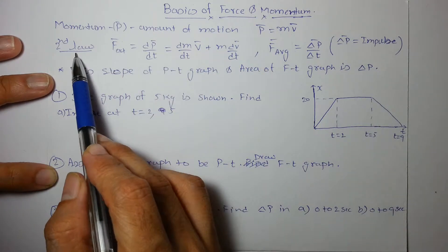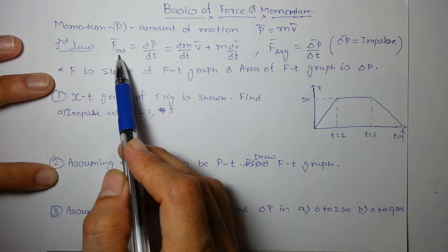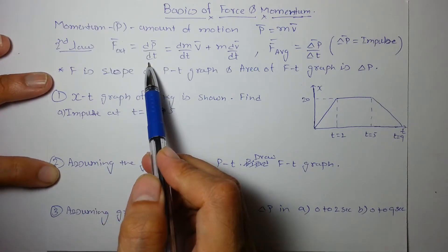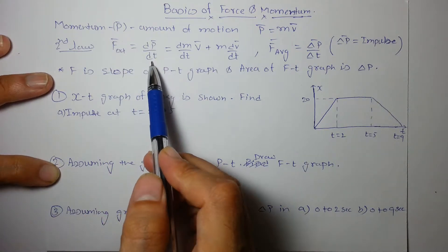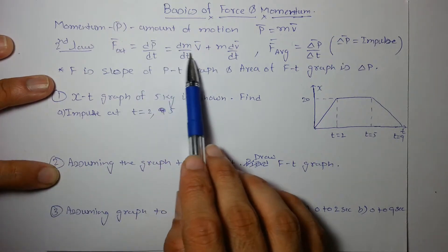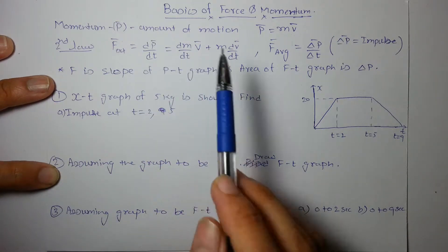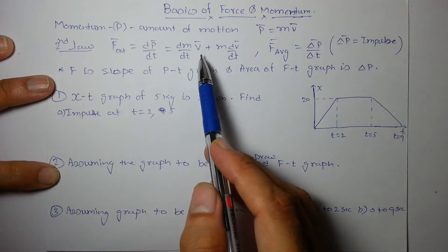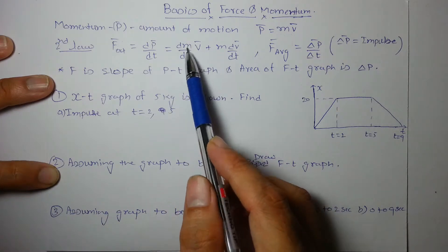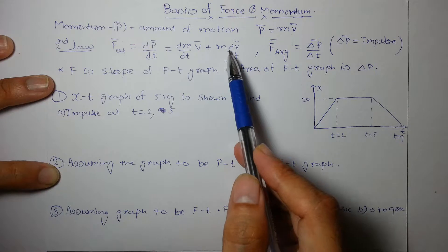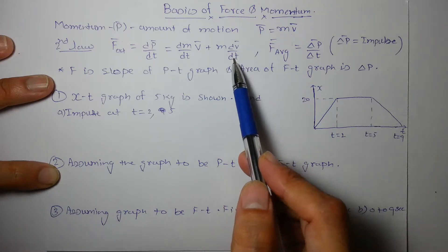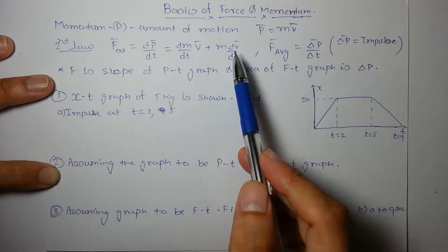The relation between force and momentum is given by Newton's second law, which states that external force equals the rate of change of linear momentum. If there is no change in mass, dm/dt will be zero, and dv/dt is treated as acceleration.